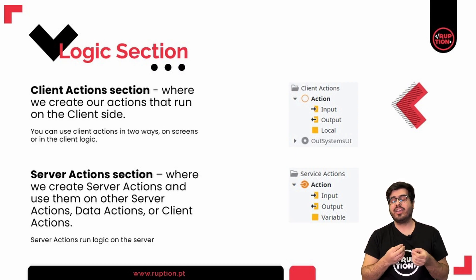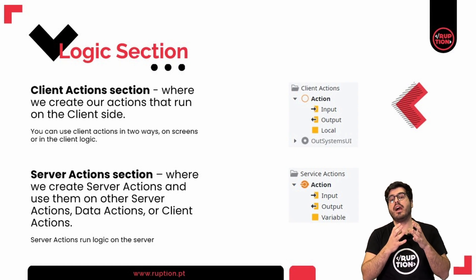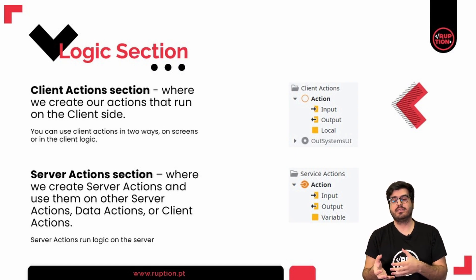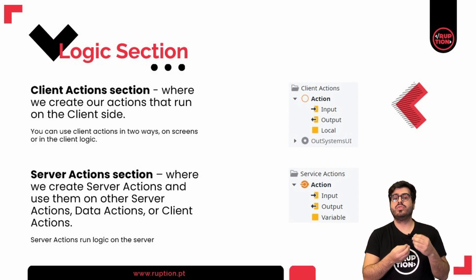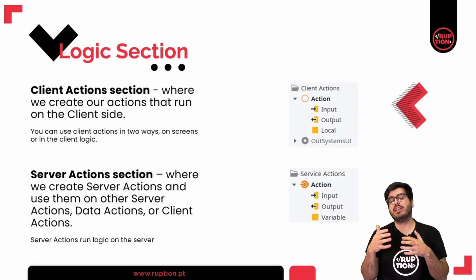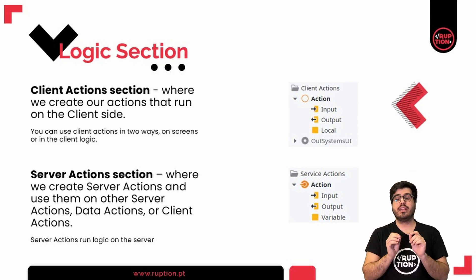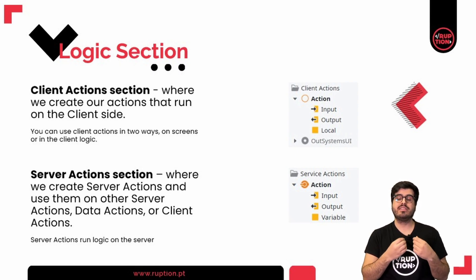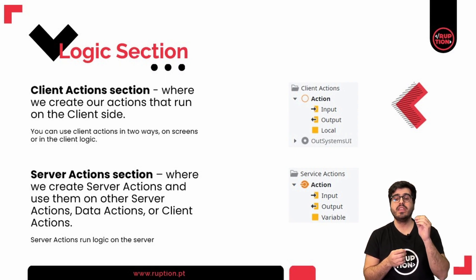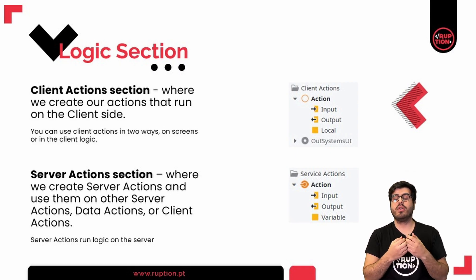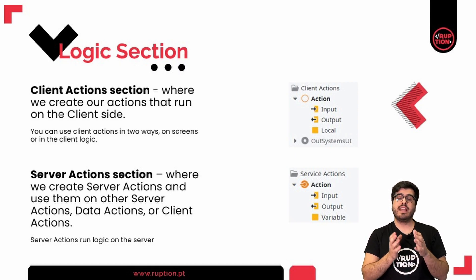First, we have the Client Actions section. This is where we create our actions that run on the client side. You can use client actions in two ways: on screens or in the client logic. In this section, we want to create client actions that can be reused on several screens so you don't have to duplicate your code every time you need it. Then we move on to the Server Actions section. Server actions run logic on the server. In this section, you can create server actions and use them in other server actions, data actions, or client actions. We will cover data actions in a later video of the From Zero to Hero series.